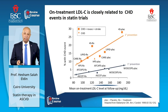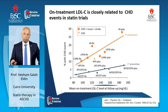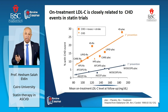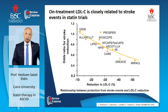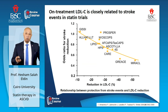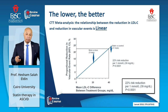Different trials — whether primary prevention like WASCOP and ASCOT, or secondary prevention like the 4S, HPS, and others — all point in the same direction: the lower you get your LDL cholesterol, the lower will be the coronary heart disease events. What applies for coronary heart disease also applies for stroke: the more you reduce LDL cholesterol, the more you reduce ischemic strokes. Meta-analyses are confirming such findings.